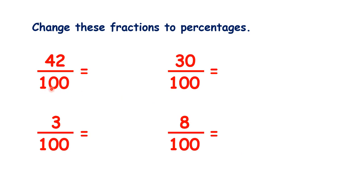As they're all already fractions over 100, this is easy. We have 42%, 3%, 30%, and 8%.